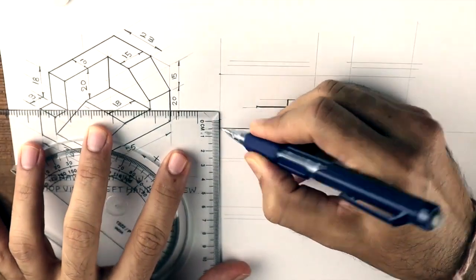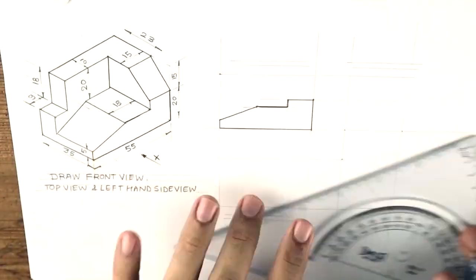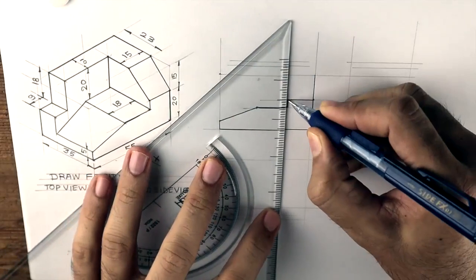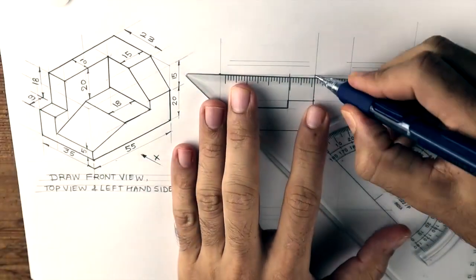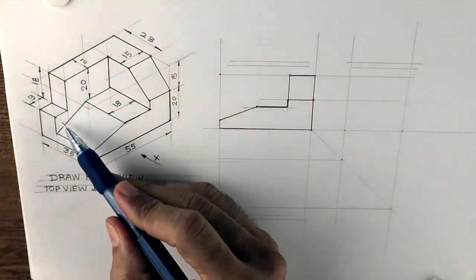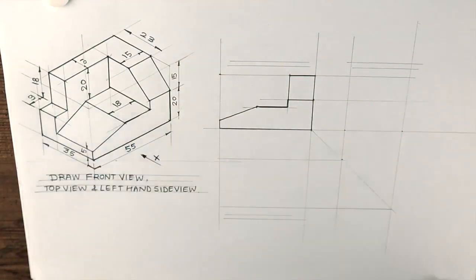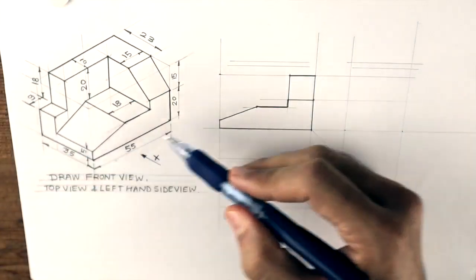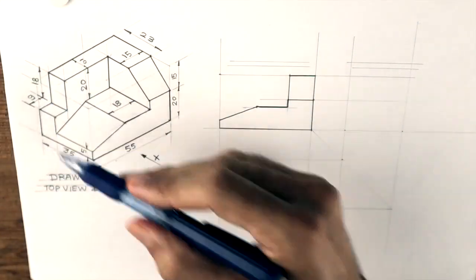We'll take 5mm from here and we'll join this slope. After that, we'll draw a vertical line, so we'll get another slope also. This part which is 9mm, this is 17 because 35 minus 18 is 17.